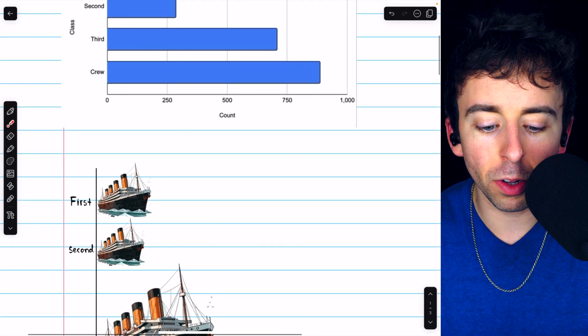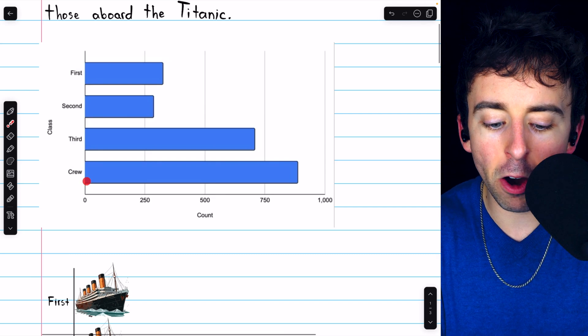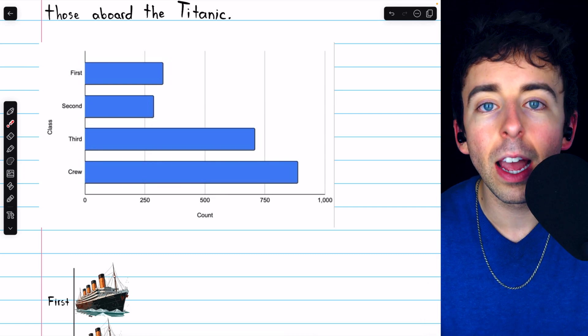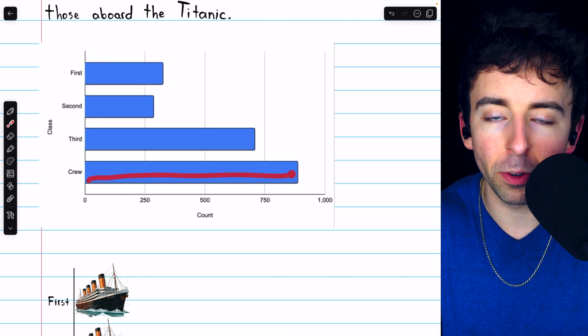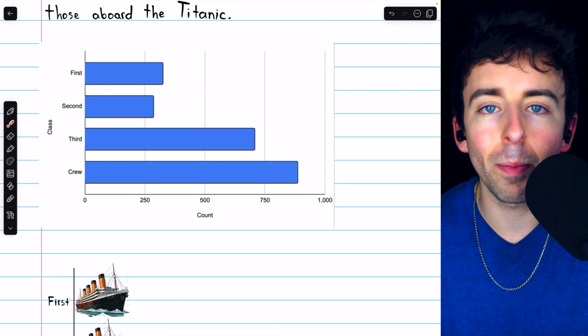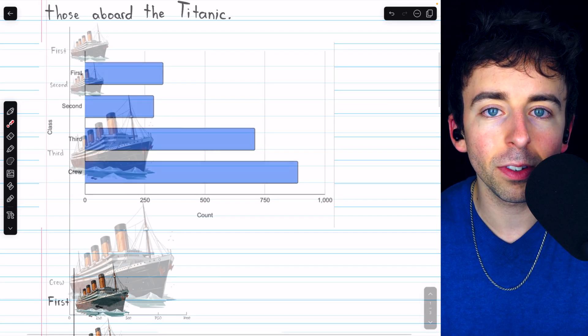There's a pretty simple but dramatic problem with this chart. If we go up to our original bar chart, we can see that there are about three times as many crew members as there are second class passengers. And so naturally, the bar representing the crew members is three times as long as the bar representing second class passengers.